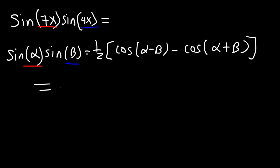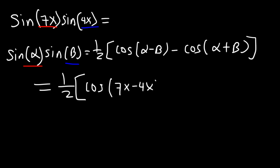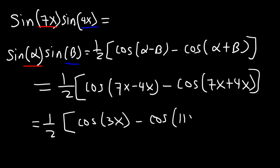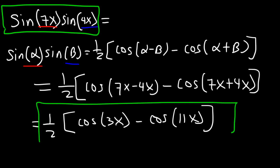Using the formula, it's going to equal one half cosine(alpha minus beta), or 7x minus 4x, minus cosine(alpha plus beta), which is 7x plus 4x. Now 7x minus 4x is just 3x, and 7x plus 4x is 11x. So sine 7x times sine 4x is equal to one half cosine 3x minus cosine 11x.